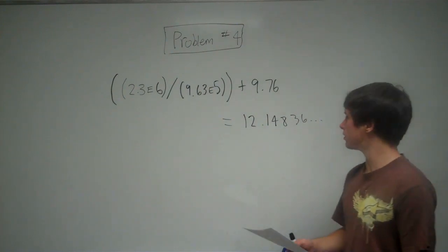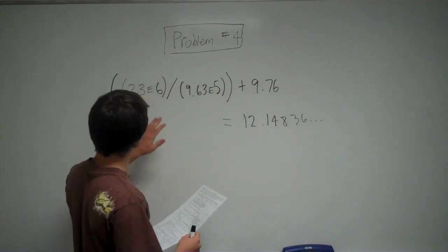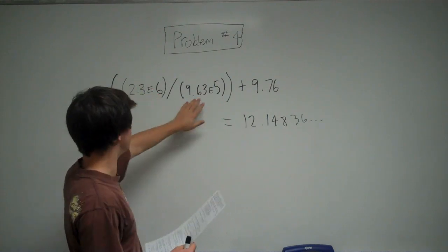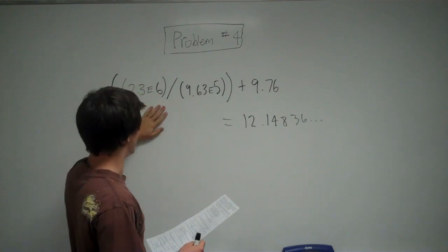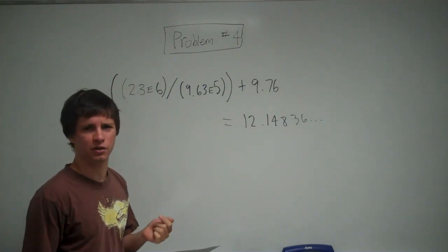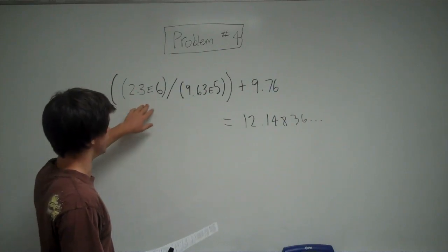It says perform this to the correct number of significant figures. What you're doing here is dividing a two-digit number by a three-digit number. So the result of that is a two-digit number because when you're multiplying or dividing, you can only consider the lower amount of significant figures.